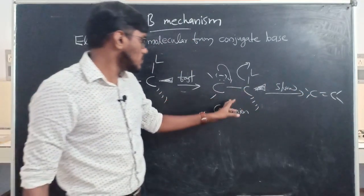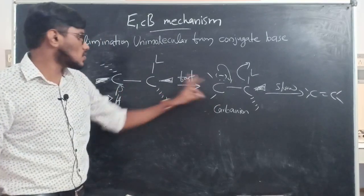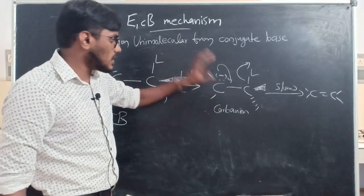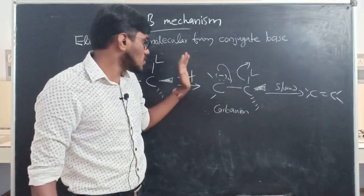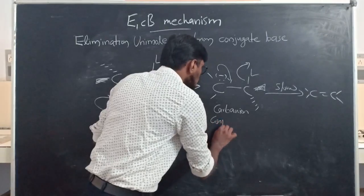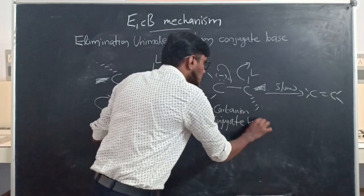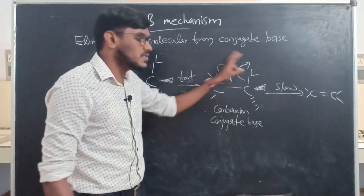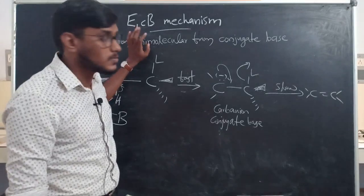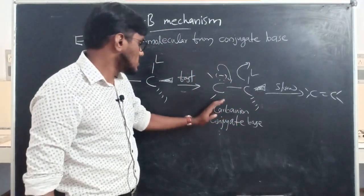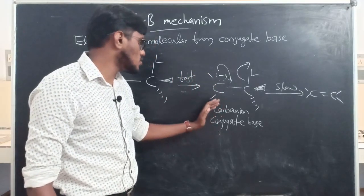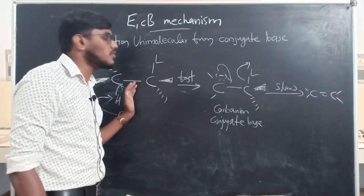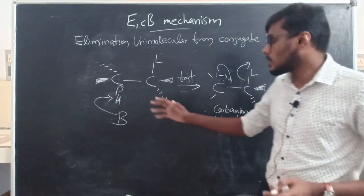The leaving group leaves in the second step, forming an alkene by elimination. This elimination occurs from the conjugate base of the compound — that conjugate base is the intermediate formed. The concentration of this carbanion or conjugate base determines the kinetics of the reaction. It follows a unimolecular mechanism, and the stability of this conjugate base determines the rate of the reaction.